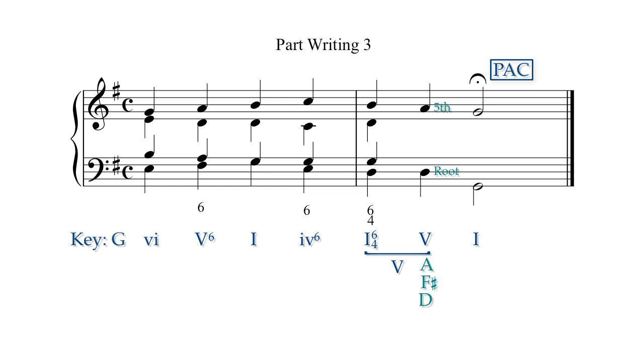Moving to the V chord, the alto will stay on D. The soprano and tenor will complete their tendencies and move down by step. Resolving to the tonic, the leading tone in the tenor can resolve as shown. Again, notice the stepwise contrary motion to the octave.